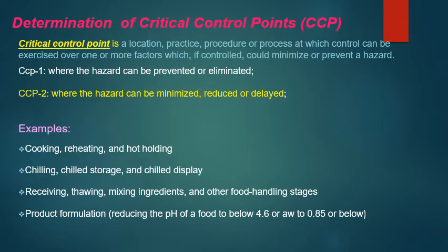Examples of CCPs include cooking, heating, and hot holding; chilling, chilled storage, and chilled display; receiving, thawing, mixing ingredients, and other food handling stages; and product formulation — such as reducing the pH of a food to below 4.6 or water activity to below 0.85.